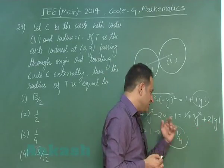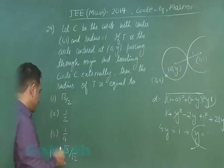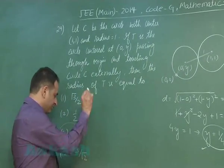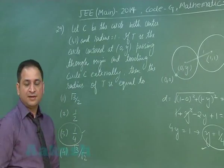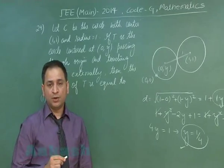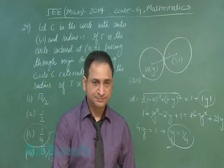So the radius of the second circle is option number 3, that is 1/4. Moving to problem number 30.